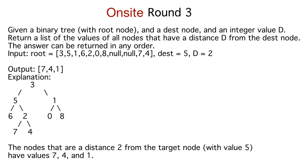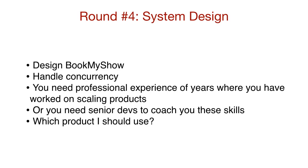Moving on to round four — system design. I was asked to design BookMyShow and also handle concurrency: for a particular cinema, city, movie, and show, multiple users are trying to book the same seat. How do you handle that? You'd use locks, but they can be slow, so how do you deal with all those trade-offs? I tried my best, starting with brute force solutions and slowly handling scalability and availability using sharding and similar techniques.